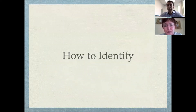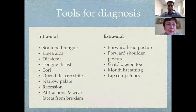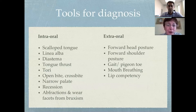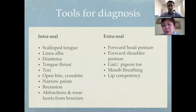Sanda, go ahead and tell us how we can identify some signs of oral myofascial disorders. There are intraoral and extraoral signs we can look for. Intraoral signs include scalloped tongue, linea alba, diastema, tongue thrust, tori, open bite, crossbite, narrow palate, recession, and also abfractions and wear facets from bruxism. Extraoral signs include forward head posture, forward shoulder posture, gait abnormalities like pigeon-toed walk, mouth breathing, and lip incompetency.